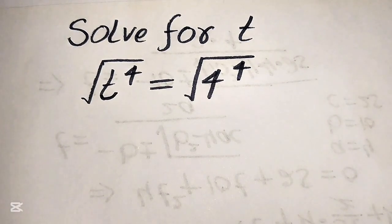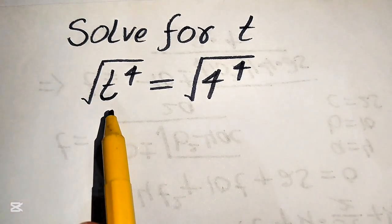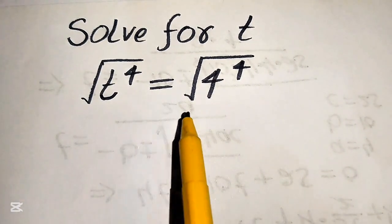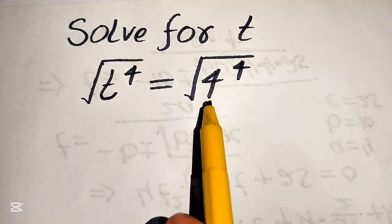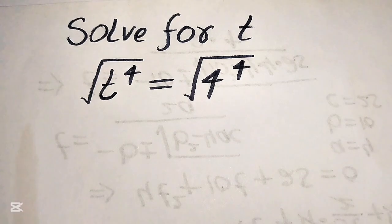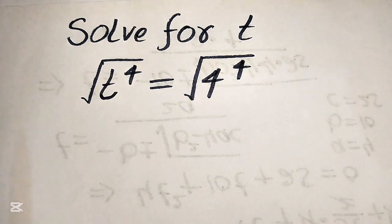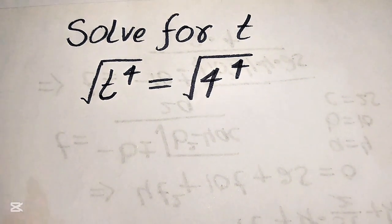Hello everyone, welcome. We solve this math algebra problem: the square root of t to the power of 4 equals the square root of 4 to the power of 4, and we solve for the values of t. If you have another method in mind, please write it in the comment section.